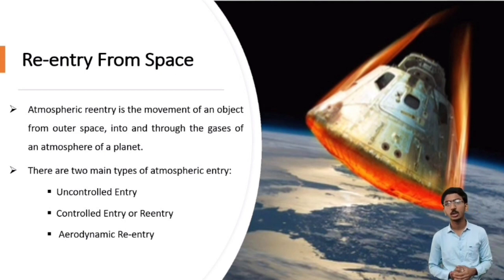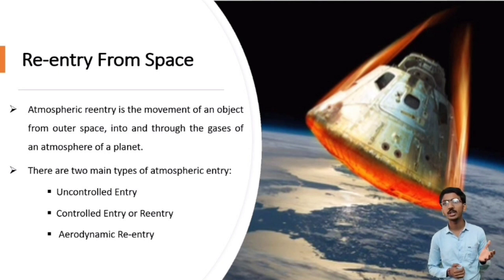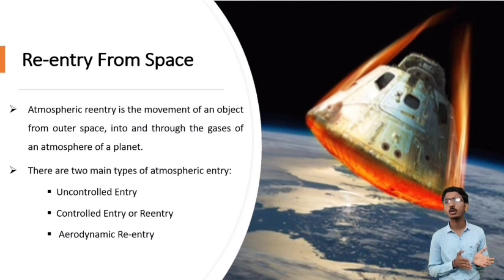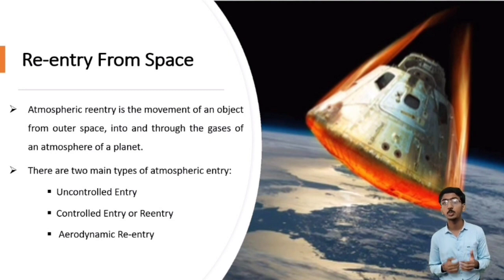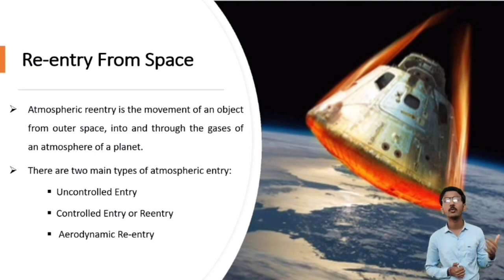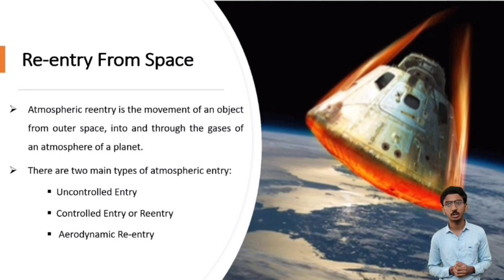Atmospheric Reentry is the movement of an object from outer space into and through the gases of an atmosphere of a planet. Basically, reentry is returning a spacecraft from space to earth's atmosphere or any atmospheric or non-atmospheric planet. There are two main types of atmospheric entry: uncontrolled entry and controlled entry. Uncontrolled entry includes entry of astronomical objects, space debris or meteoroids. Controlled entry or reentry is entry of a spacecraft capable of being navigated or following a predetermined flight path. Aerodynamic reentry is an extra type of reentry.